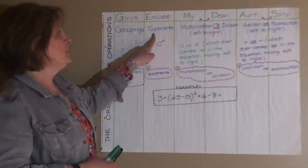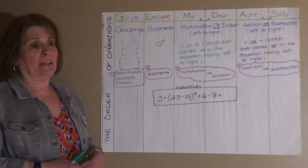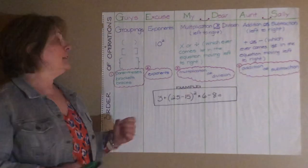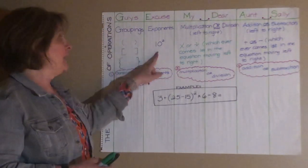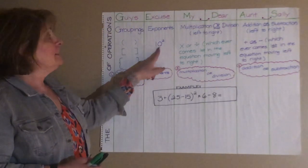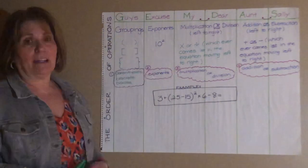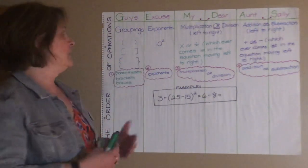Next, the E for excuse stands for exponents. And again, in fifth grade, the only exponent we use are powers of 10. And so it would be 10 to the second power, 10 to the third power, etc.